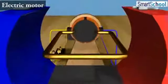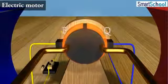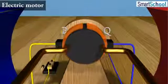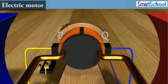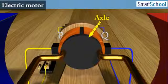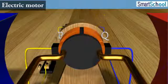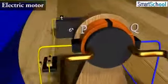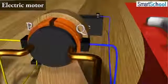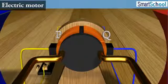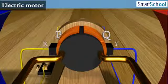The ends of the coil are connected to the two halves P and Q of a split ring. The inner sides of these halves are insulated and attached to an axle. The external conducting edges of P and Q touch two conducting stationary brushes X and Y, respectively, as shown.